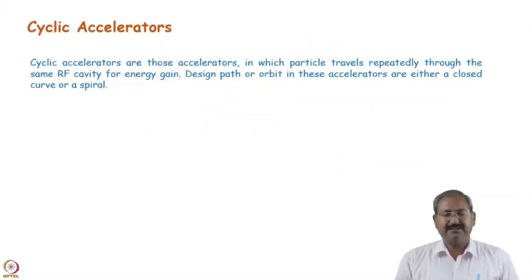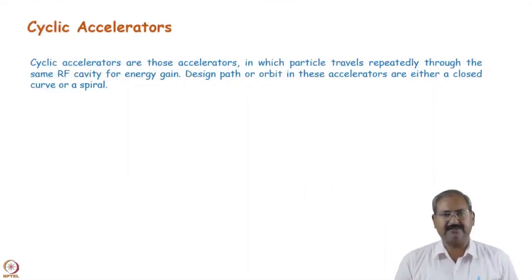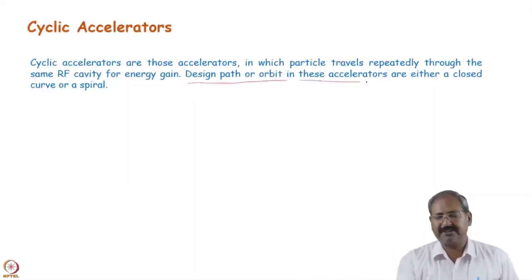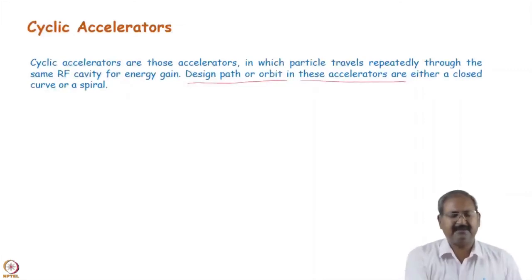Let us begin with lecture one — basic principles. Cyclic accelerators are those accelerators in which the same RF cavity can be used multiple times to increase a particle's energy. When a particle passes through the RF cavity it gains energy, and if we send the particle through that cavity again, the same cavity can be used repetitively for energy gain. This solves the length problem of linear accelerators, allowing compact accelerators. To achieve this we need a closed-curve orbit — or possibly a spiral — so that the particle passes through the same point again and again.